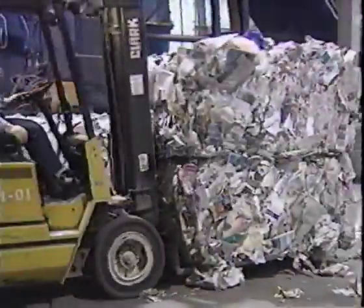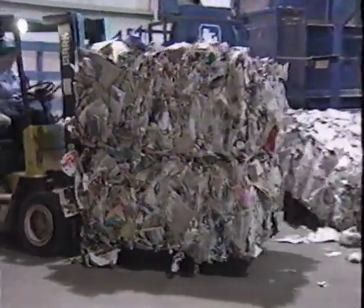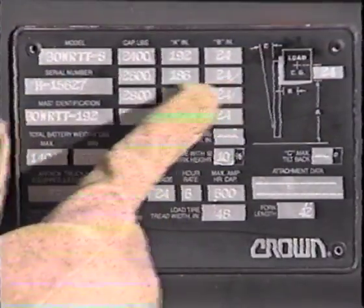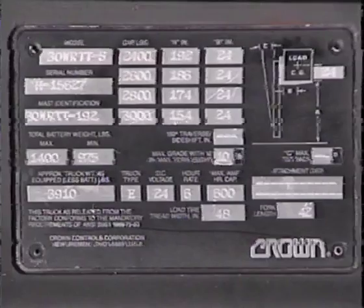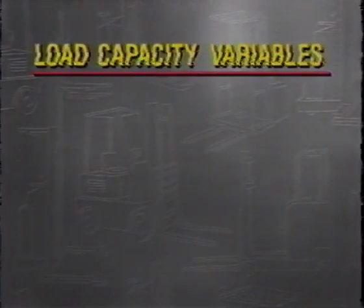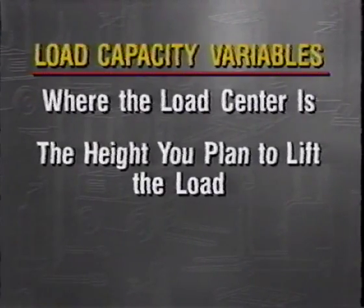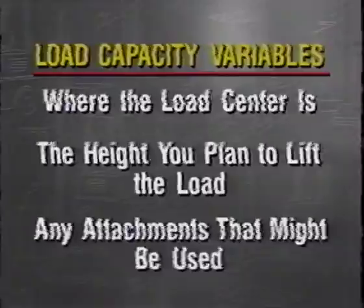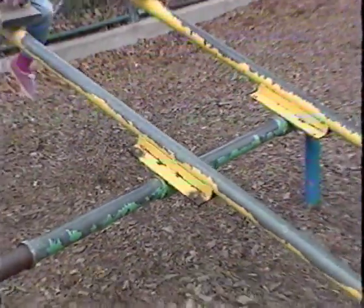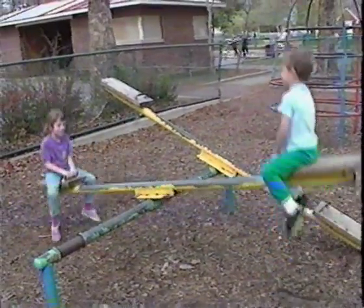One of the most important facts you need to know about your forklift is how much it can safely lift. The weight is listed as the load capacity on the manufacturer's data plate. The load capacity is not a constant — it is affected by where the load center is, the height you plan to lift the load, and any attachments that might be used. Your forklift works on the same basic mechanical principle as a seesaw, teeter-totter, or any other type of lever.